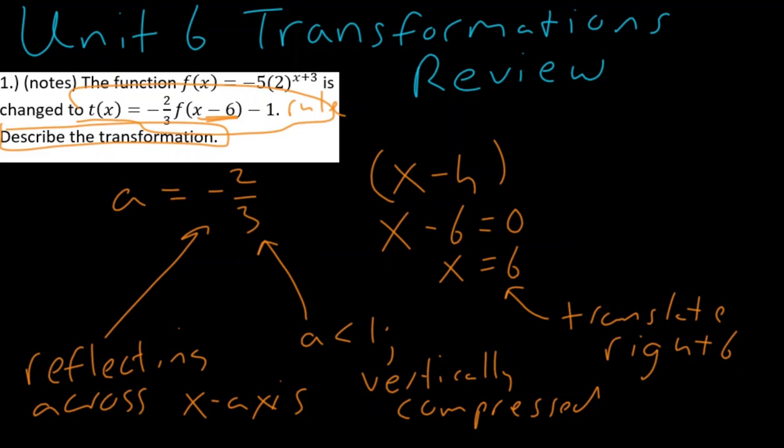Lastly, we have this negative 1, so where k is, negative 1 is equal to k, and so we know that this is going to go down 1. So whenever it says describe the transformation, all you're doing is looking at the rule and seeing what's happening.